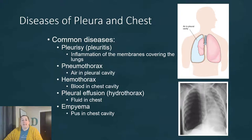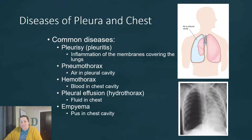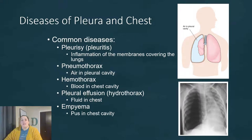Pneumothorax is air in the pleural cavity that puts pressure on the lung and can ultimately cause it to collapse. This can be a complication of pulmonary infections, a tumor, or a pulmonary tissue tear where the lung releases air into the cavity. Trauma such as gunshot wounds, stabbings, and rib fractures can also cause pneumothorax.